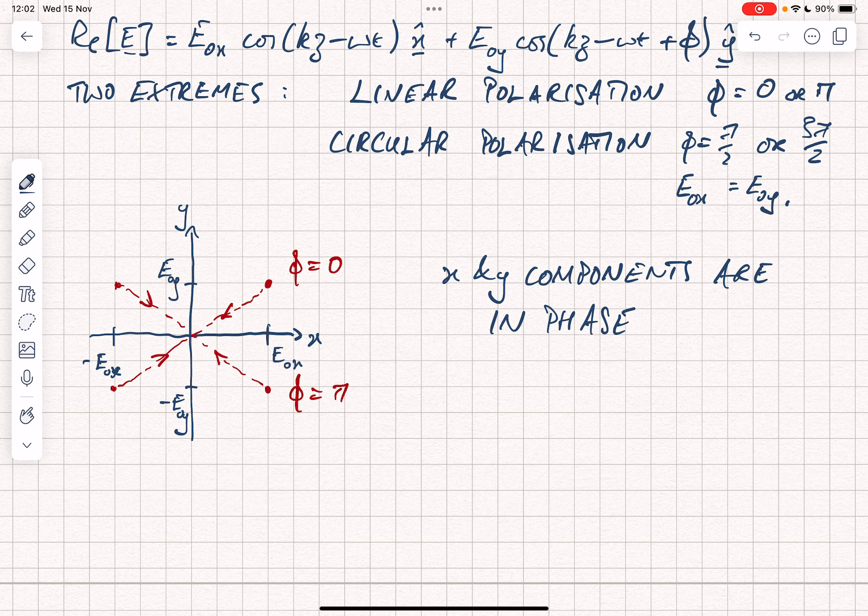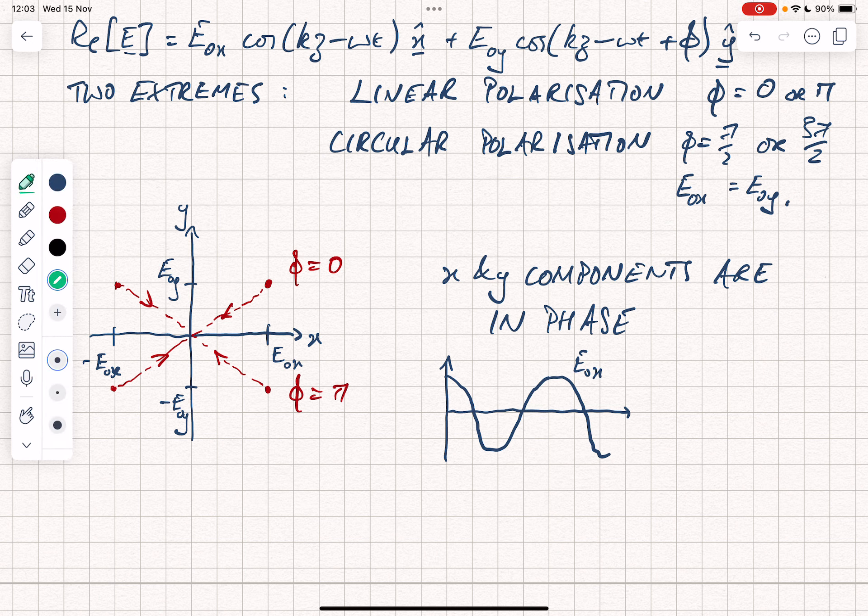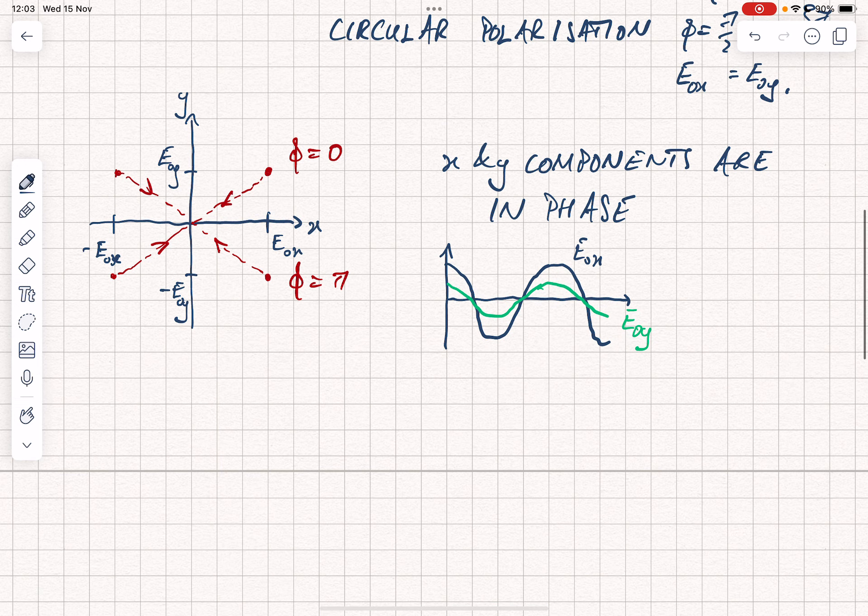This means that if you were to plot them against time, you would find that they would both be cosines or sines. We would have this kind of behavior for e0x, and in a different color we would have a similar in-phase behavior for e0y.